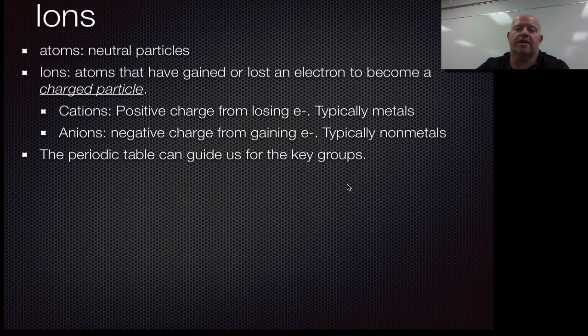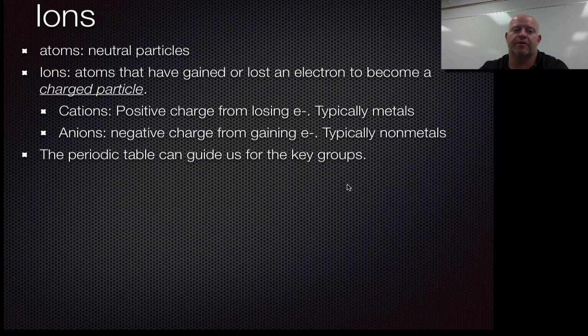Now when we look at the periodic table, we need to start talking about ions. And we talked a little bit about them in our last unit, but we want to make sure we have them officially into our notes now. So ions are a form of an atom that's lost or gained an electron. So an atom we say is a neutral particle. An ion somehow has become a charged particle, gaining electrons or losing electrons.